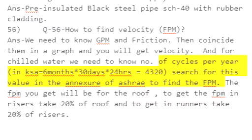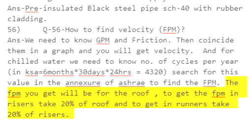Number of cycles per year in KSA: 6 months multiplied by 30 days multiplied by 24 hours equals 4320. Search for this value in the ASHRAE annex to find the FPM. The FPM you get will be for the roof; to get the FPM in risers, take 20% of the roof value. For runners, take 20% of the risers.